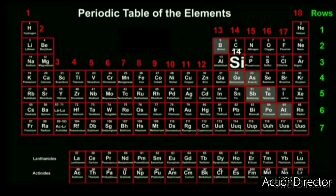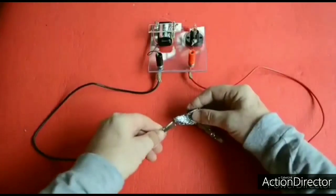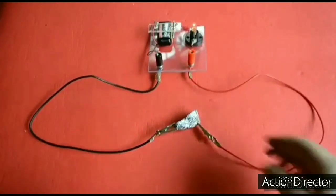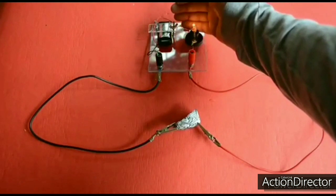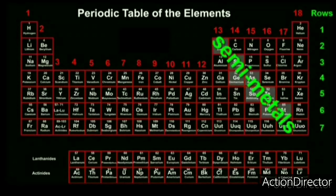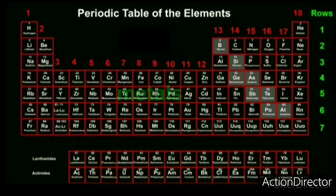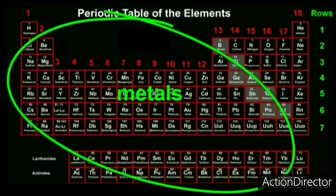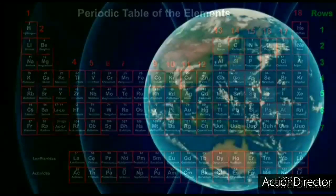What about these boxes in between? These elements have both the properties of metals and non-metals. We can name them semi-metals or metalloids. Now you can see metals on the left, non-metals on the right, and the light-colored metalloids in the middle.